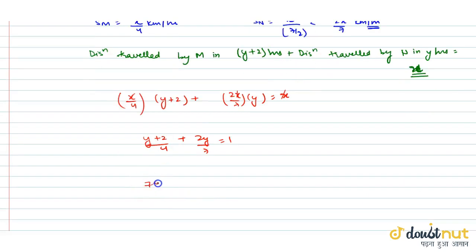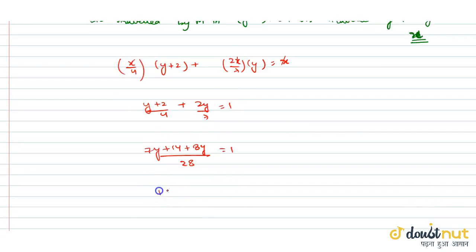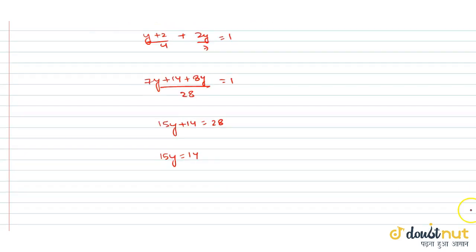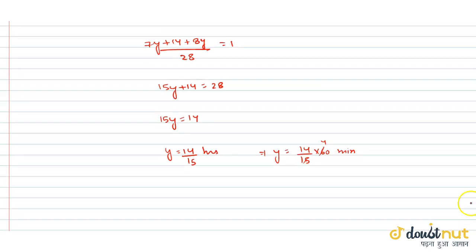Taking LCM, we get (7y + 14 + 8y)/28 = 1, so 15y + 14 = 28, which means 15y = 14. Therefore y = 14/15 hours, that is y = 14/15 × 60 minutes, which gives 56 minutes.